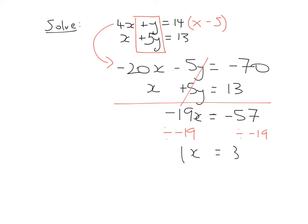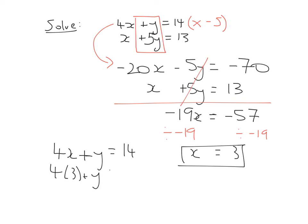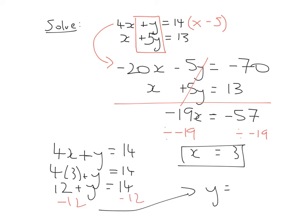Now I have x equals three, so I need to find y. I'll substitute three for x into the top line: four x plus y equals fourteen. Substituting in three gives twelve plus y equals fourteen. Minus twelve from both sides, therefore y equals two.